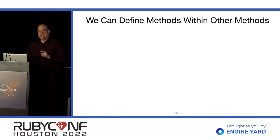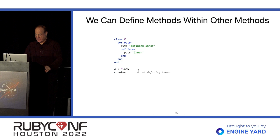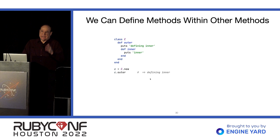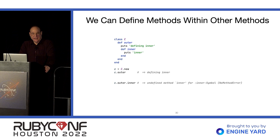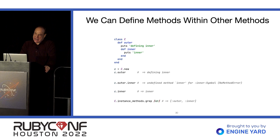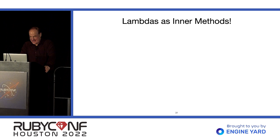It turns out that in Ruby you can define methods within other methods. We have a class C with an outer method that defines another method inside. But when we try to call it as outer.inner, it doesn't work — inner is just a regular instance method like any other instance method. So we can't use methods as true inner methods in Ruby. But guess what we can use instead? Lambdas. Or Procs.